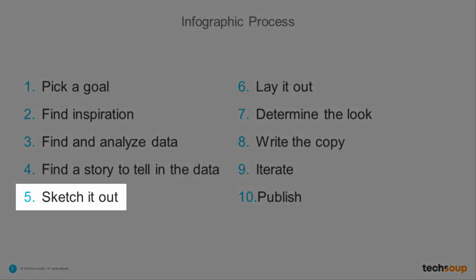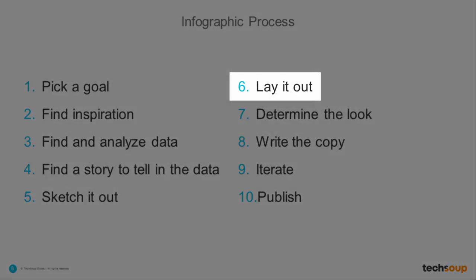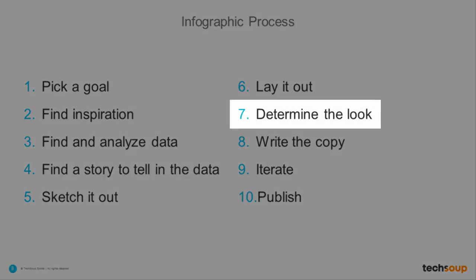Number five, sketch it out. I literally sketch my infographics out on paper with a pen first, and I cannot draw — so this is a great exercise to get it on paper and see how it's going to look. Number six, lay it out. Picking a template or drawing the basics with places for graphics and copy is a great way to plan. You can just draw boxes where copy is going to go; don't worry about writing it down on paper first. Number seven, determine the look: pick your colors, your fonts, your images, and your graphics. If you have a brand, this is exactly where it comes into play. If not, find something that looks like the collateral your organization may already use that you happen to like.